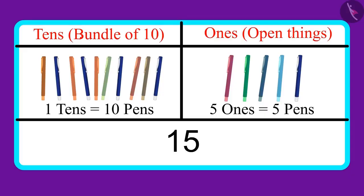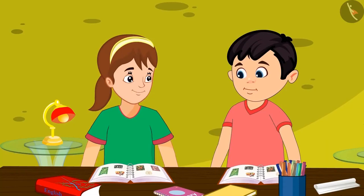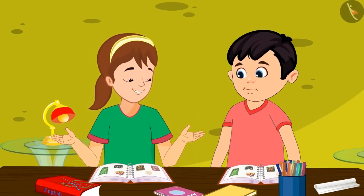This means that one tens and five ones make fifteen. You have understood the topic of tens and ones quite well.